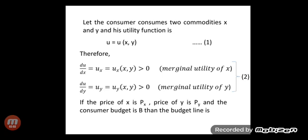If the price of x is px, the price of y is py, and the consumer's budget is b, then the budget line is b = x·px + y·py, which is equation number three.